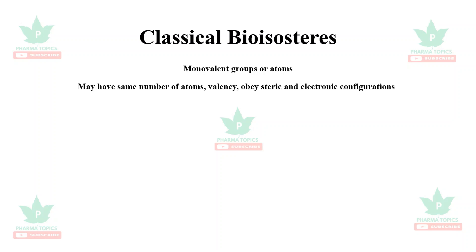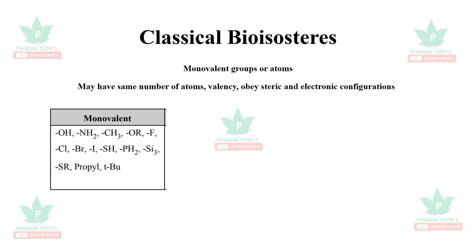The first category is monovalent groups or atoms, which may have the same number of atoms, valency, and obey steric and electronic configurations. For example, –OH can be substituted with –NH₂, –CH₃, –OR, or fluorine. Halogens such as chlorine can be replaced by bromine or iodine.